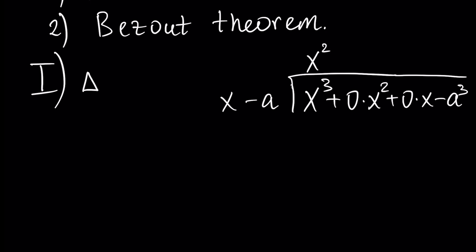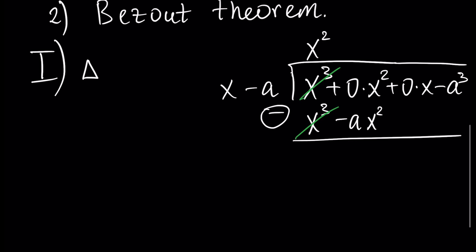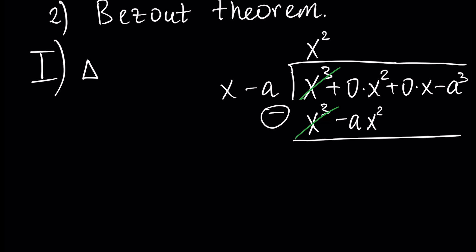We write x squared in the quotient. x squared times x minus a equals x to the power three minus a x squared. After performing the subtraction we get a cancellation, and the result is a x squared. We bring down the remaining terms.